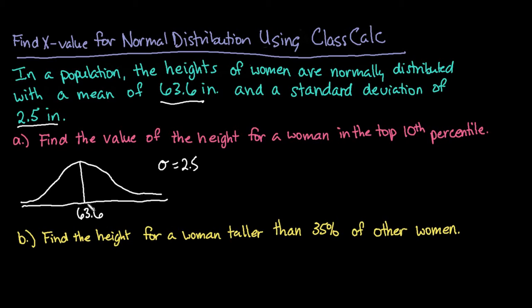If you are using the table, you would have to first find your z-score and then convert it. But using technology, you can go directly from your percentage to the answer. For the first one, we're going to find the value of the height for a woman in the top 10th percentile. Anytime it says top, that means that the area is going to be shaded to the right. So we're going to shade approximately 10 percent of our entire curve to the right. And we're trying to figure out what is our value or our height that corresponds to this starting point.